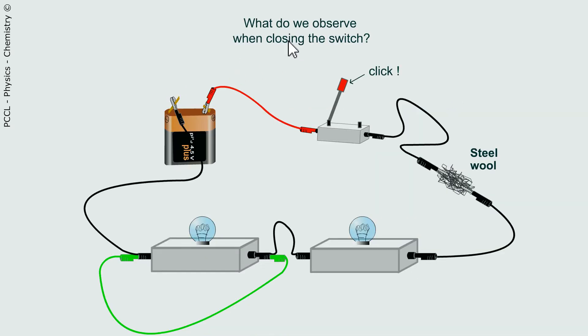In situation number two, there is still a green wire here which is shorting one lamp. What will you observe when you turn on the switch?